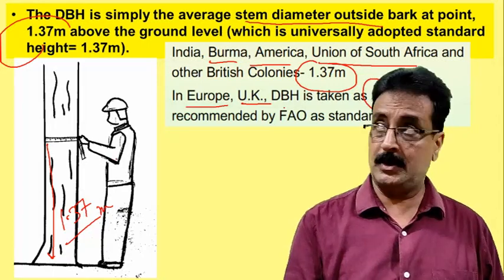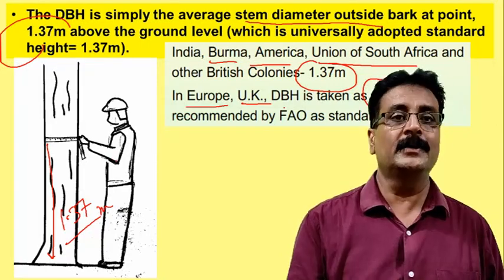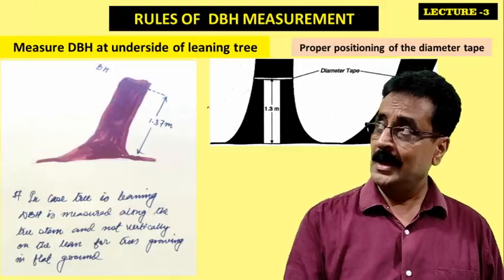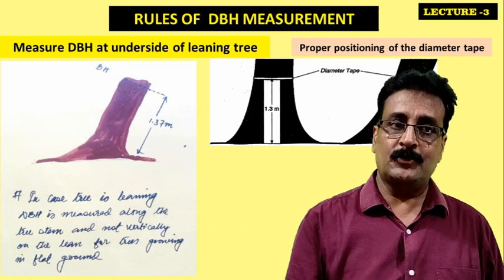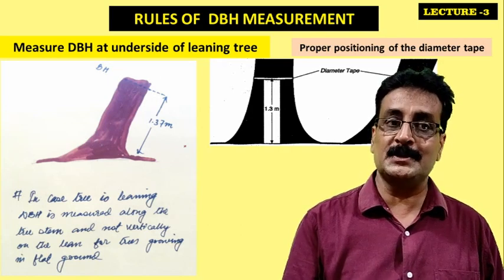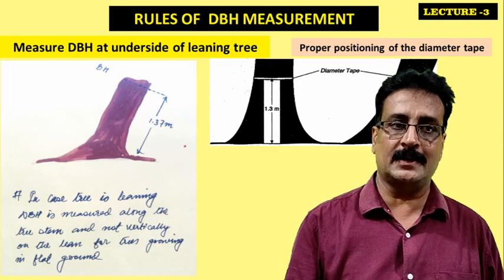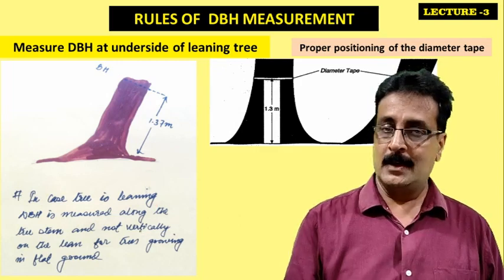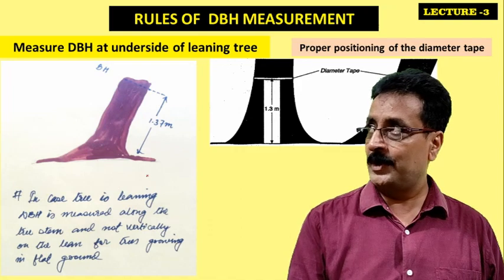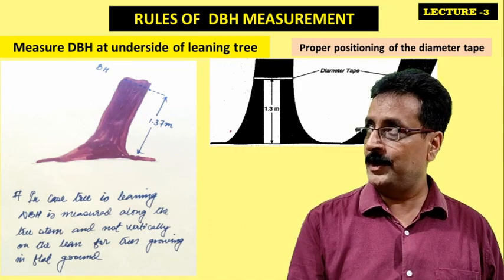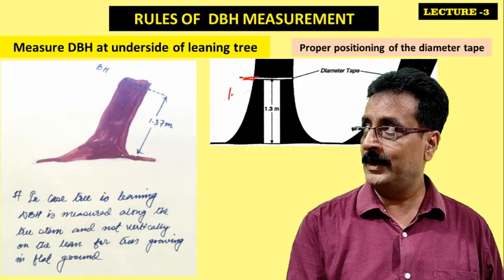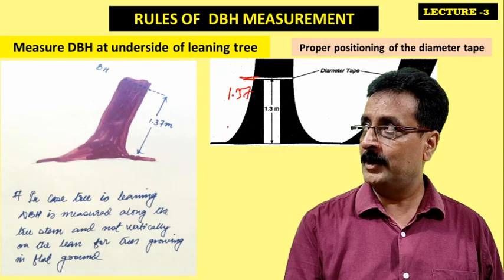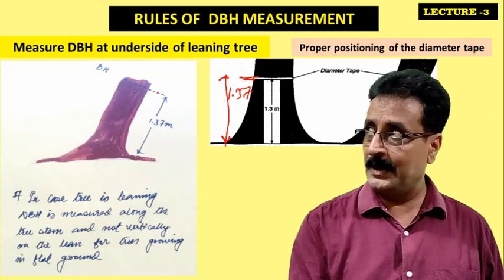At the ground level we take 1.37 meters — this is the universally adopted standard height. There are standard rules for how to measure diameter, followed across the entire world. For a straight tree there is no problem; we simply take the diameter at 1.37 meters from the ground level.